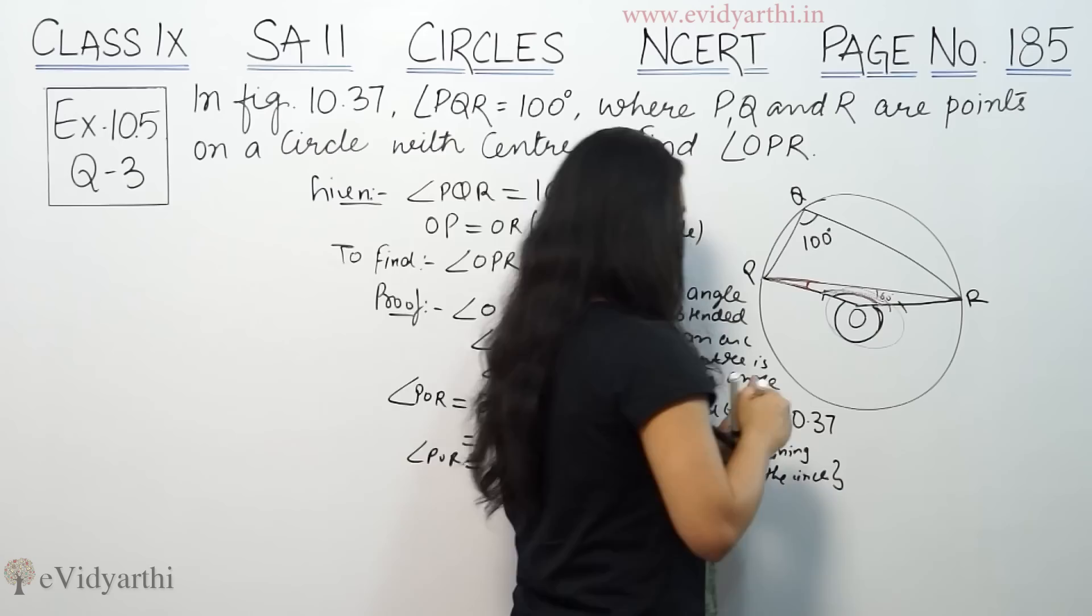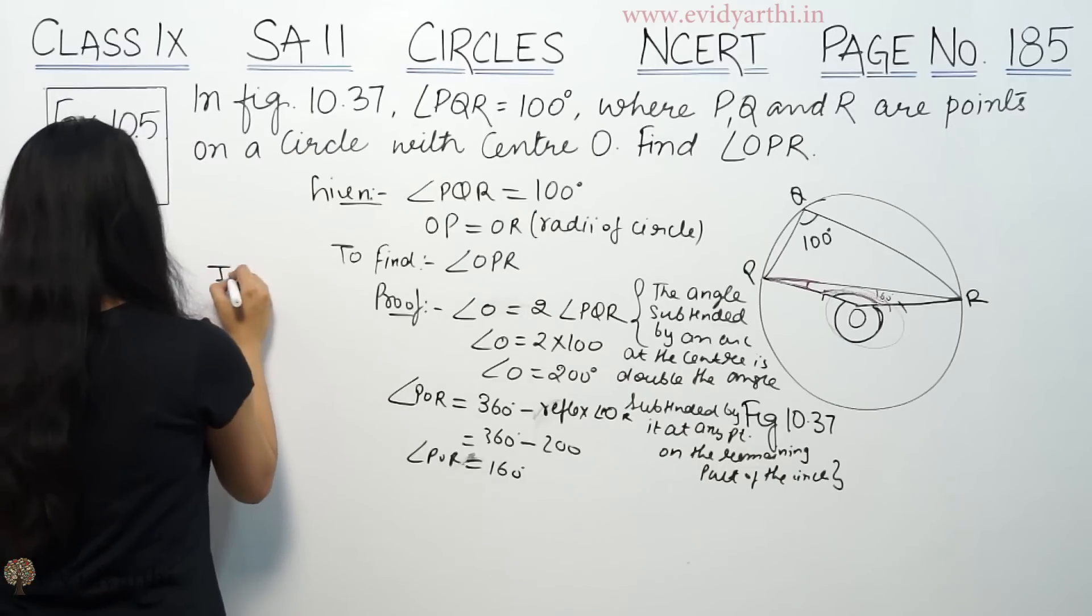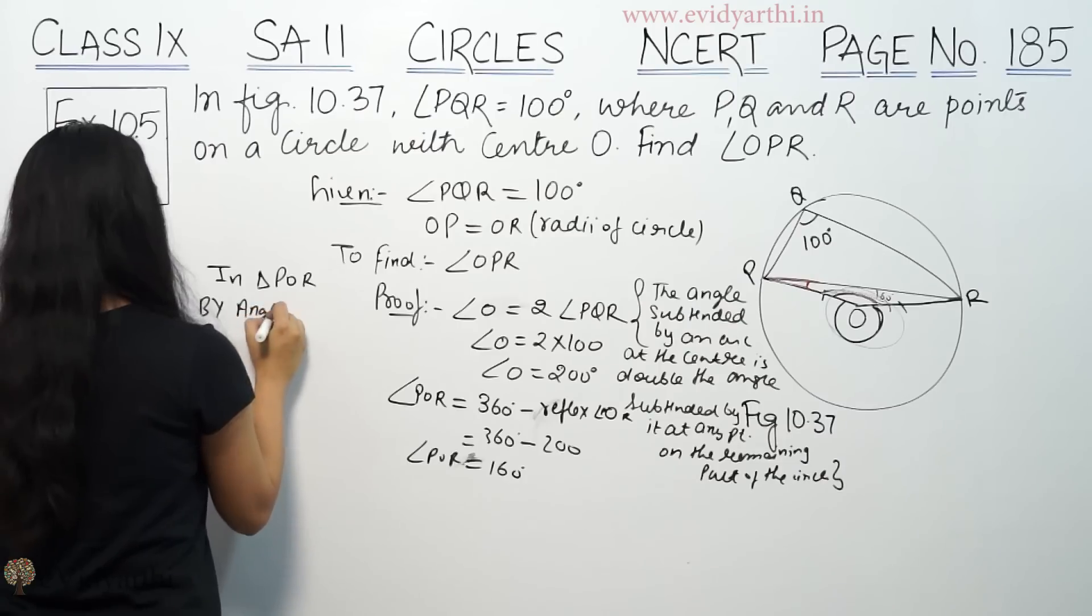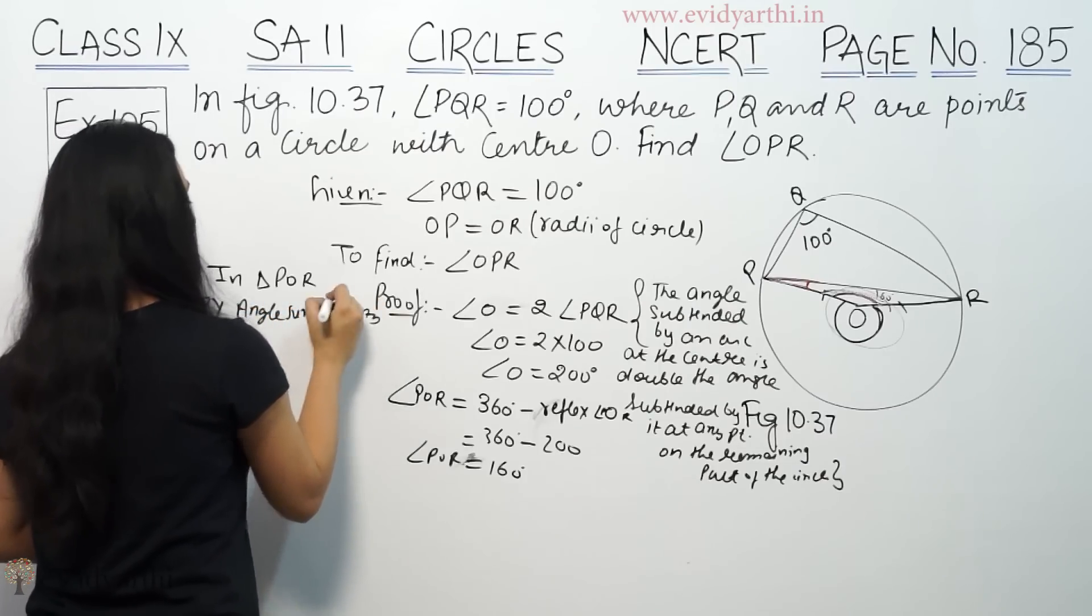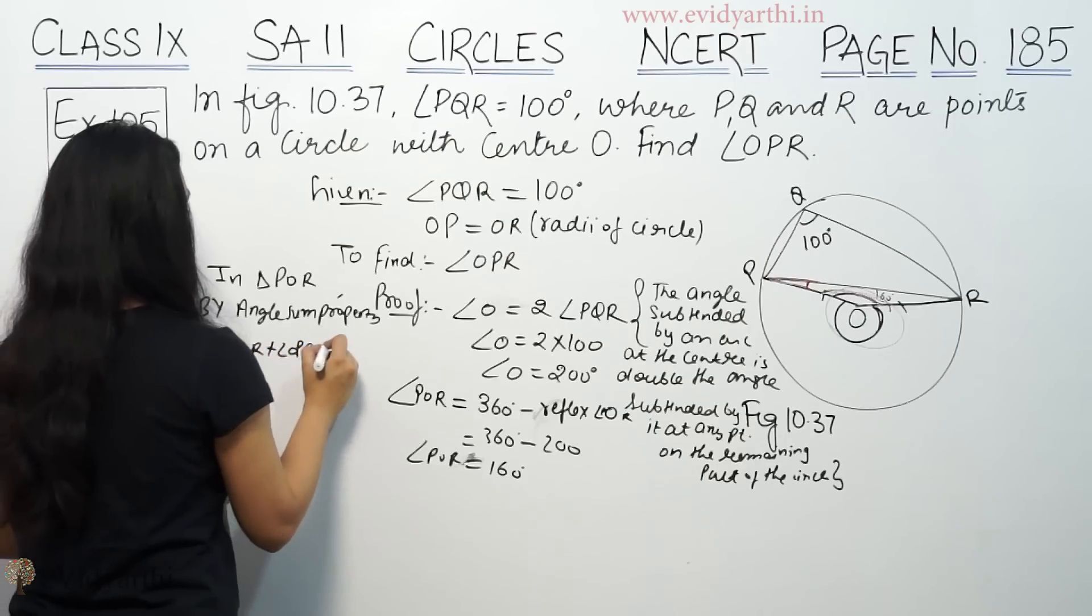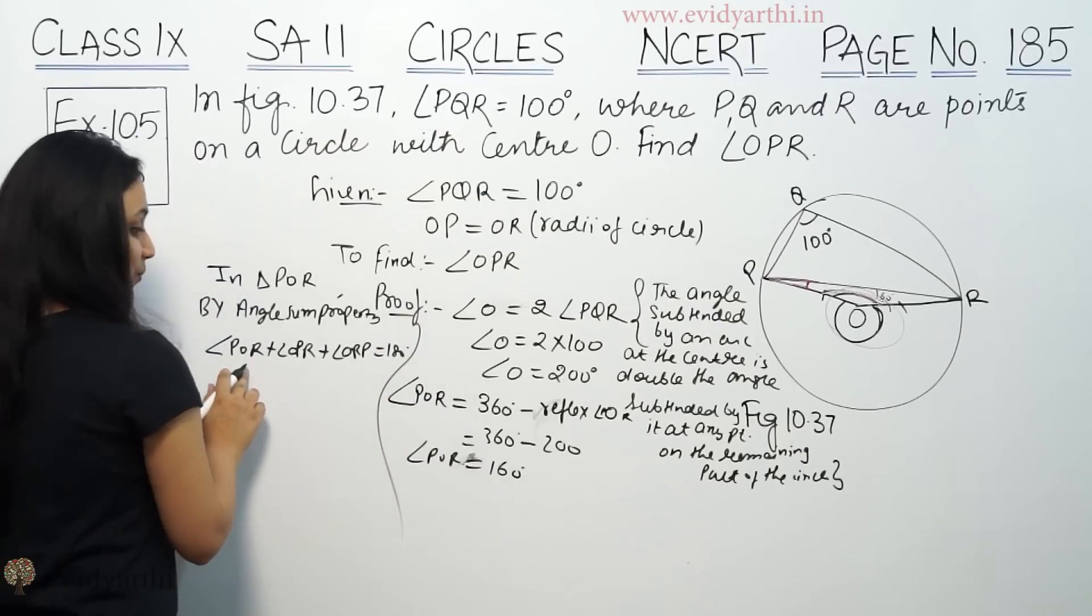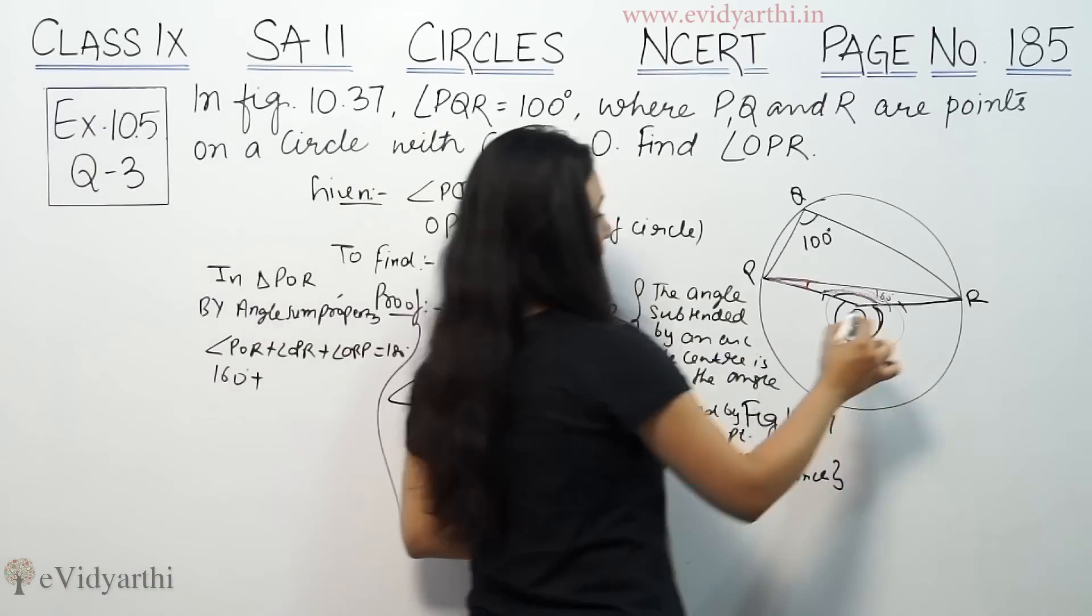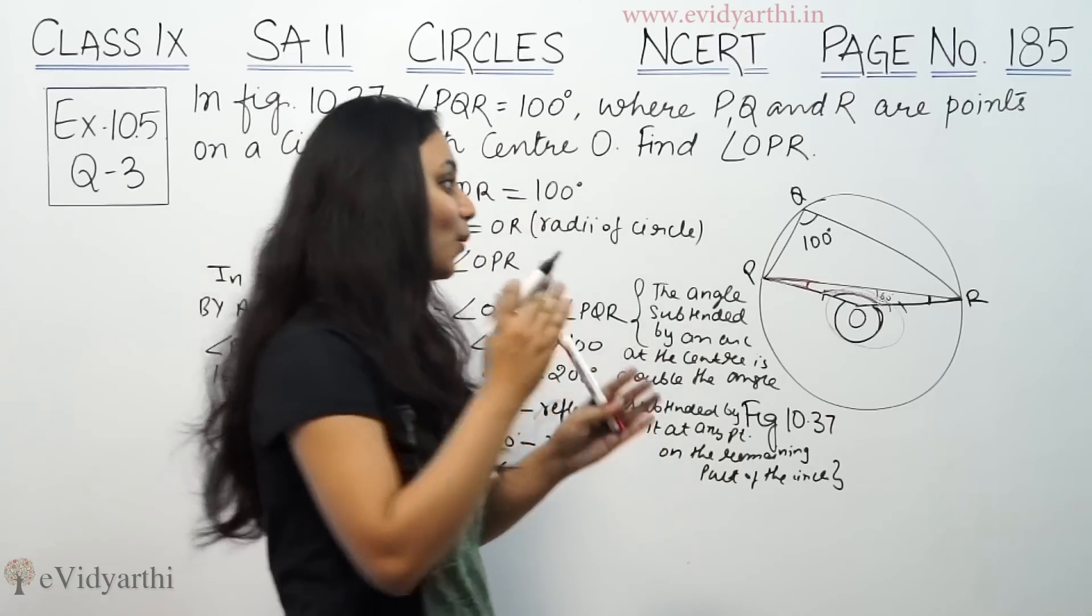So if this is 160, I am going to use triangle POR angle sum property. In triangle POR by angle sum property, angle POR plus angle OPR plus angle ORP is equal to 180. So POR value is 160, OPR, ORP, both angles equal, because in isosceles triangle there are two sides equal, so opposite angles are equal.